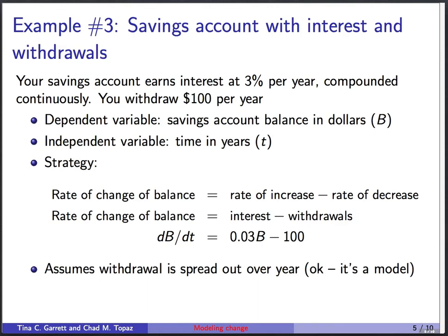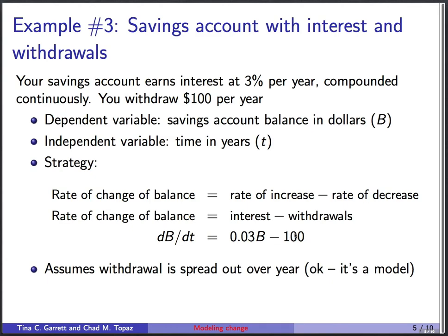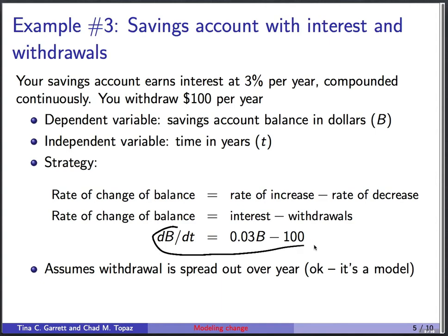Now, similarly, we have the same savings account but we're making withdrawals — $100 per year. The rate of change of your balance is rate of increase minus rate of decrease. The increase is due to earning interest, and there's a decrease due to withdrawals. So db/dt equals 0.03b minus 100. The withdrawal rate is a fixed $100 per year regardless of your balance.